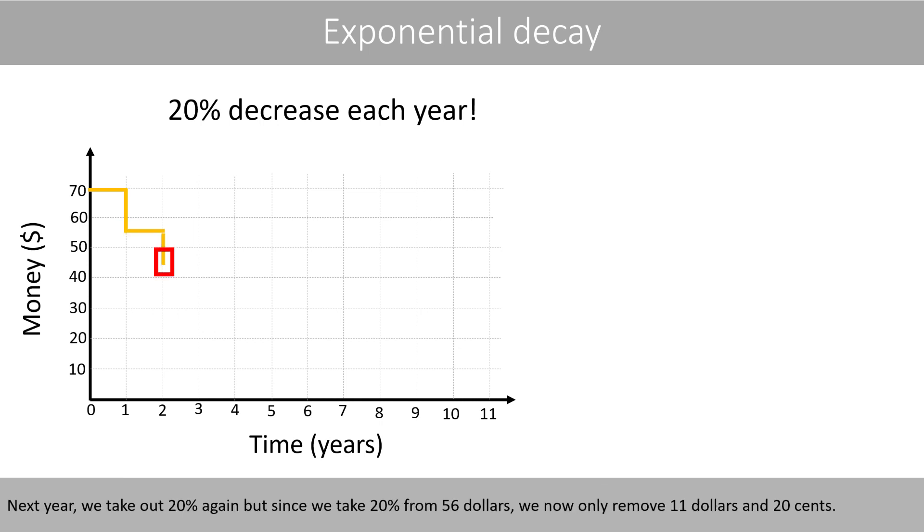Next year, we take out 20% again. But since we take 20% from $56, we now only remove $11.20. We then continue to reduce the amount by 20% each year.